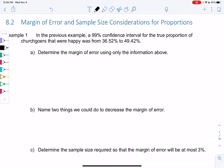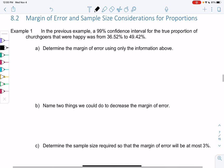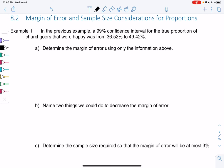Section 8.2, margin of error and sample size for proportions. In the previous example from the last section, we found a 99% confidence interval for the true proportion of happy churchgoers was 36.52% to 49.42%.